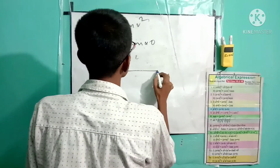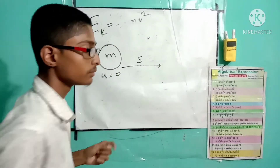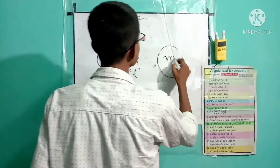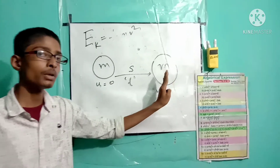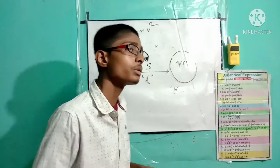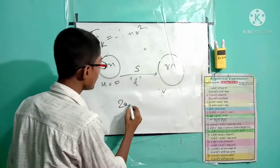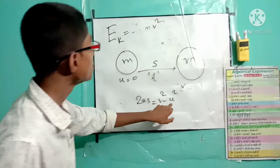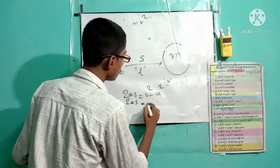Suppose this object travels a distance s in time t, and after time t the velocity of this object will be v. So the final velocity of this object equals v and the initial velocity equals zero. Using the equation of motion: v² = u² + 2as. Since u equals zero, we get 2as = v².